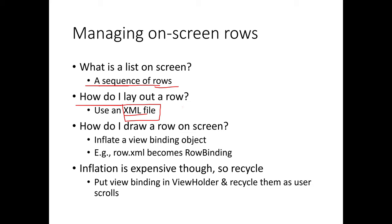When I have this XML file, how am I going to draw a row on the screen? I'm going to use an operation called inflate. You're going to inflate a view binding object. We've seen view binding objects before when laying out the contents of our activities. If you have row.xml, the compiler builds a view binding object called RowBinding. The compiler generates this binding object and we inflate it — that's how we get the views for the row on the screen. The thing about inflation is it's expensive, because you're turning this XML file into a whole bunch of objects in memory.